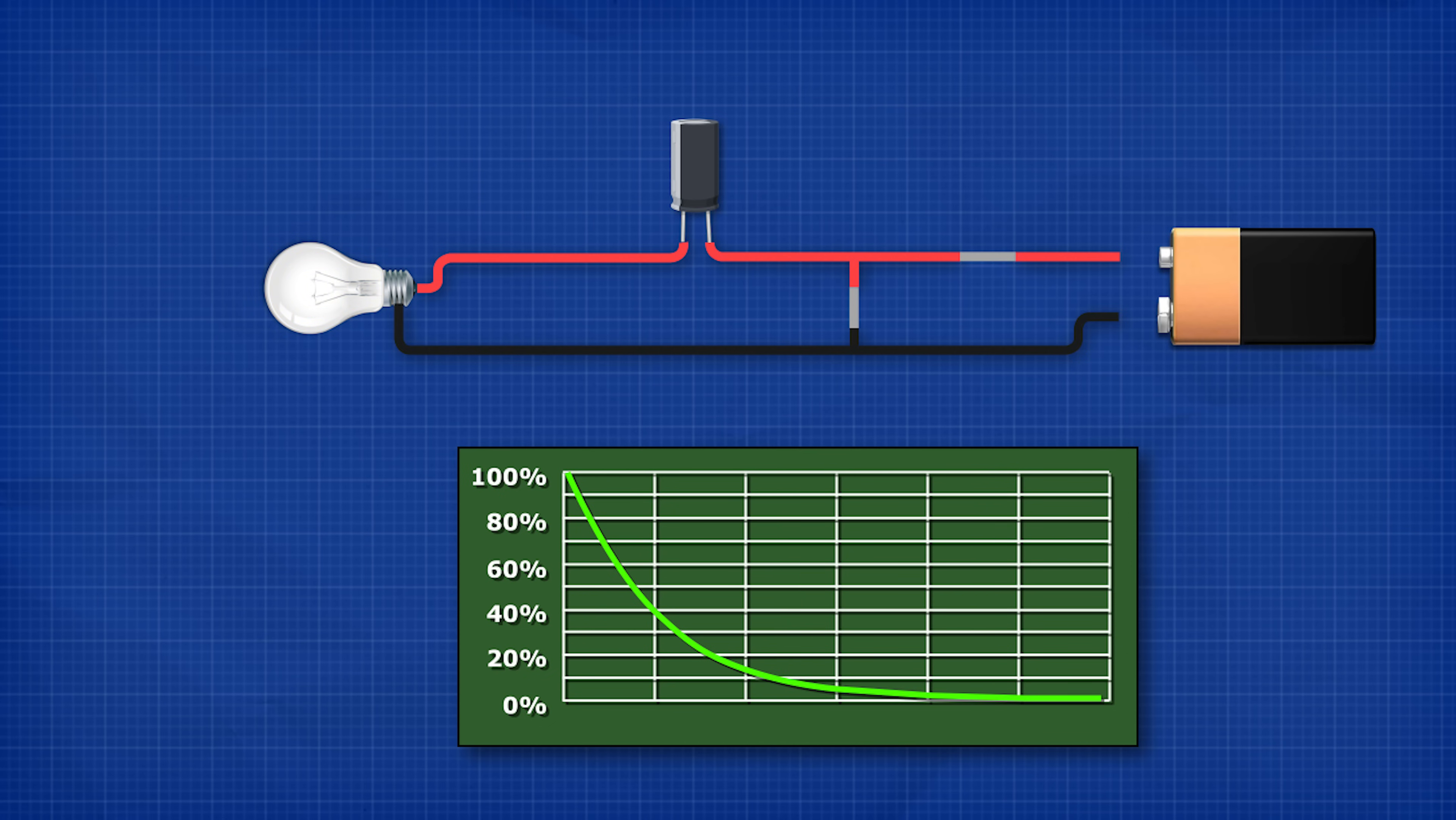We split this curve into six segments but again we're only interested in the first five. At point one the voltage is always 36.8 percent, point two will be 13.5 percent,